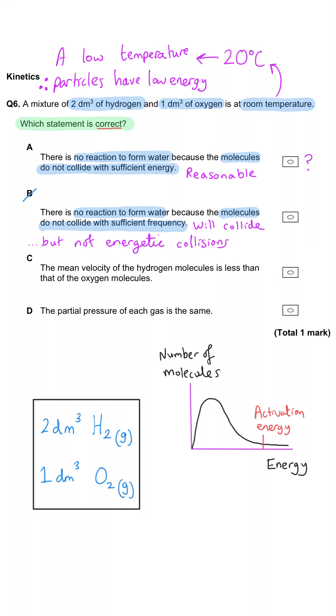C, the mean velocity of the hydrogen molecules is less than the oxygen. No, all gases behave ideally. They will have the same velocity.